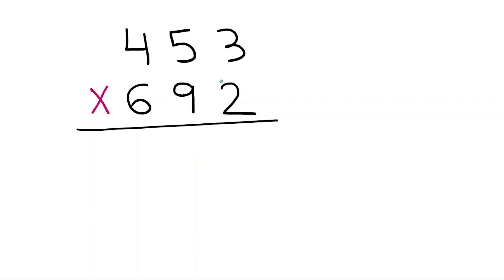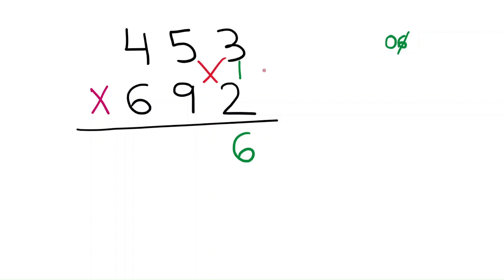Let's take another example. First, multiply the ones place: 3 times 2 is 6. Cross 6 and write it in the answer. There is no carry forward. Again, do the multiplication for tens and ones.